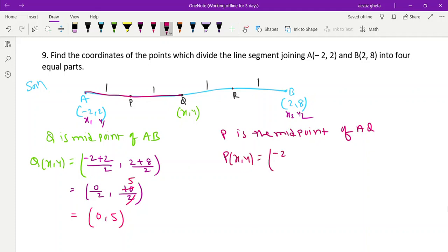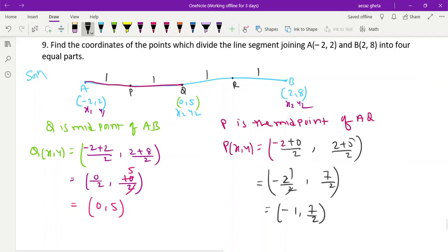x₁ is -2, this is Q part. Q is what? Q we got the answer (0, 5), so this will be x₂, y₂. (-2 + 0)/2, (2 + 5)/2. You should write the formula x₁ + x₂, that is it. So we'll get -1, comma 7/2.